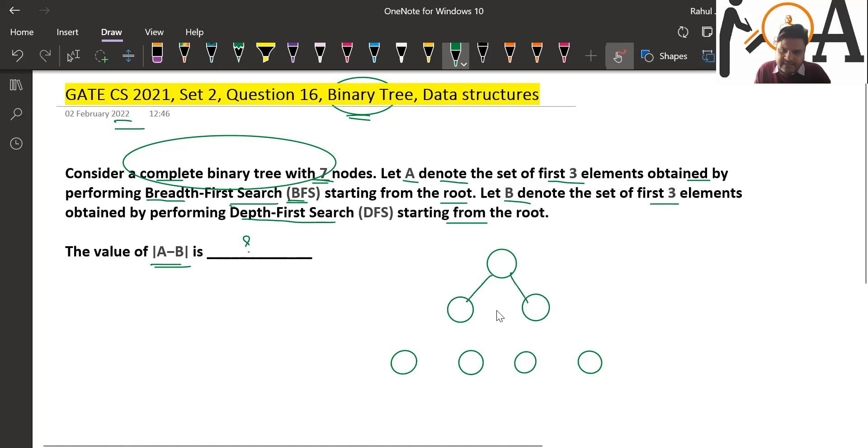You can see that the definition of a complete binary tree is that at each level, the nodes are completely filled from left to right and top to bottom. So this is level 1.